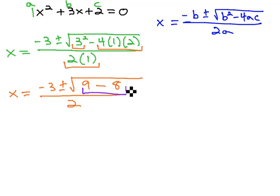Continuing to simplify inside the radical, 9 minus 8 gives us x equals negative 3, plus or minus the square root of 1, all over 2.